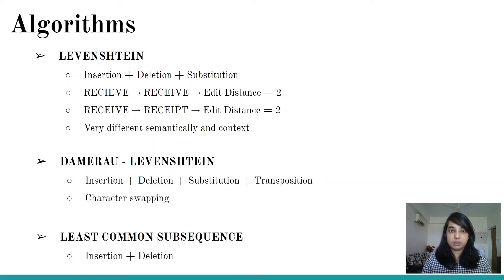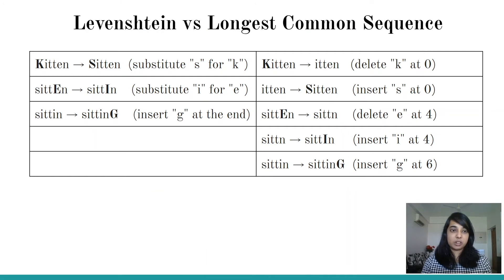Just to see how this works and how they differentiate, let us take an example of 'kitten' which needs to be converted to the word 'sitting'. The Levenshtein algorithm is the one on the left and the LCS is on the right. As you can see it takes three operations and the LCS takes five operations. Levenshtein is definitely a much better approach, but it is again depending on your use case as to whether you would like to go ahead with LCS or with Levenshtein.